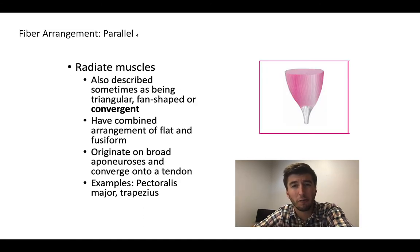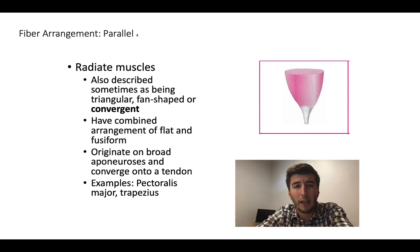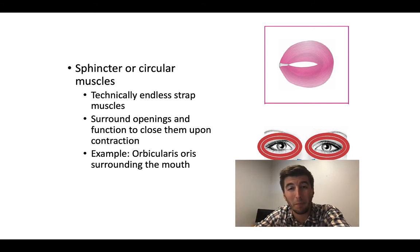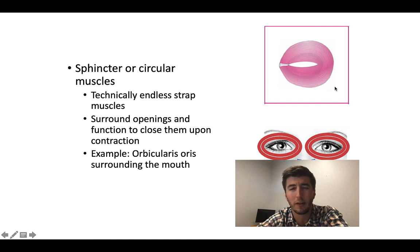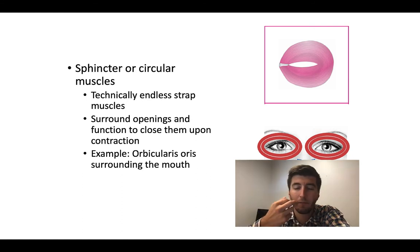Radiant muscles are oftentimes your convergent or fan-shaped muscles. A great example is the pectoralis major — think about the shape of the pec and how it fans out. These muscles have broad aponeurosis origins and then all converge onto tendons. Sphincter and circular muscles are another type of parallel muscle, technically strap muscles because they're fairly uniform in diameter around a ring. These surround openings and control closing, such as the circular muscles around the eyes and around the mouth.